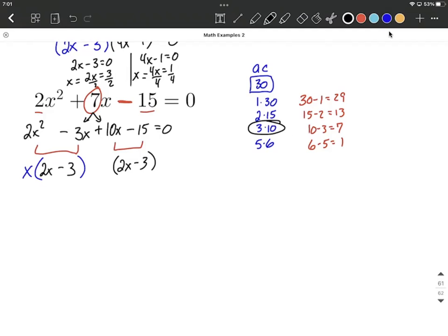So in this case, I kind of think backwards. And I think 2x times what goes out here to make a positive 10x. Well, 2x times 5 is going to make 10x, and this time it has to be positive. So 5 times 2x makes positive 10x, and positive 5 times -3 makes -15 if we redistribute it.